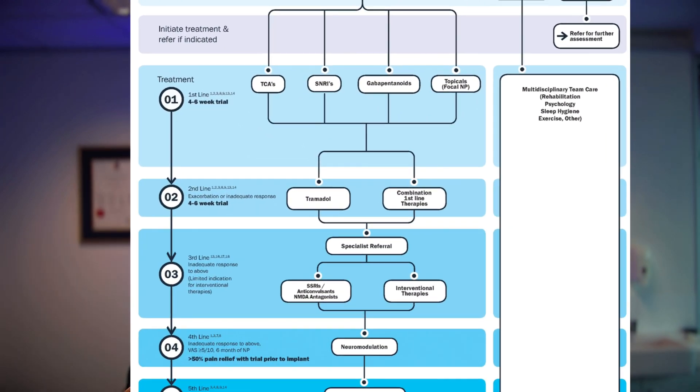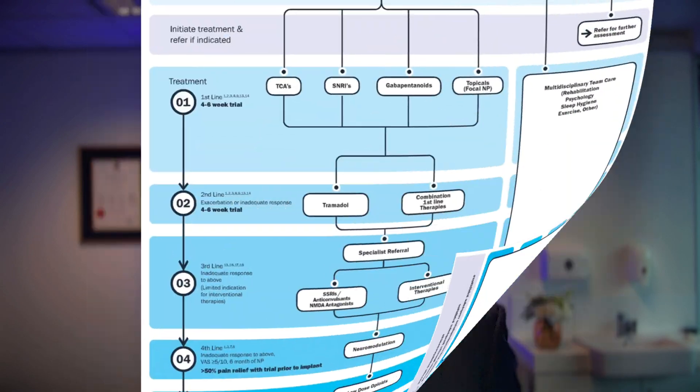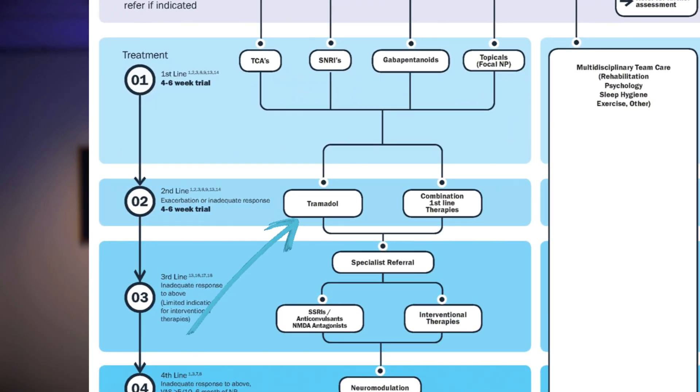Step two is to combine these medications, and we combine them a lot. The person sitting in front of me needs to have this applied to them individually, not just based on what the research says. Also in step two, sometimes tramadol can be useful as a very weak non-opioid opioid. If combination anti-neuropathics and consideration for tramadol is not helpful, then we move on.